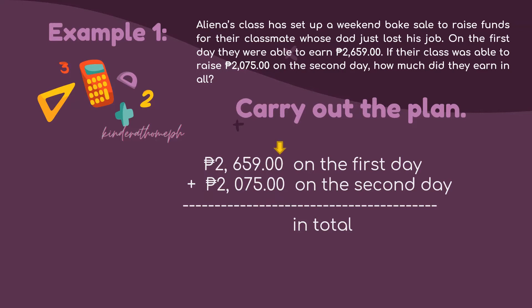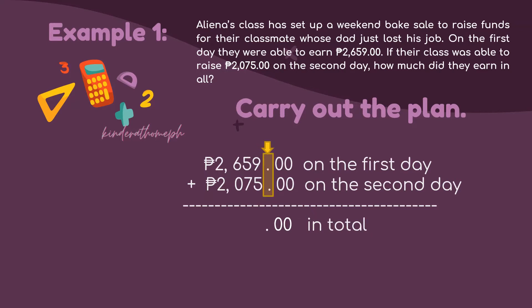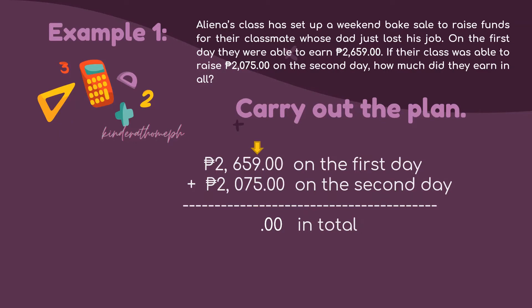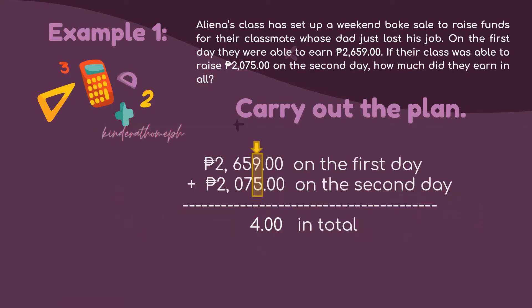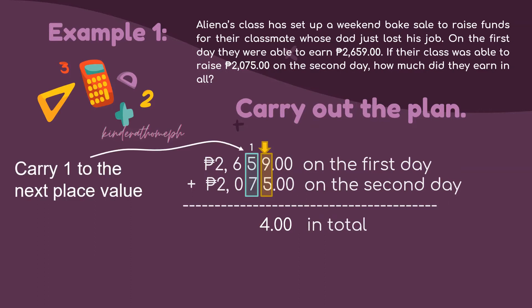We add 2,659 pesos and 2,075 pesos step by step. Starting with the cents columns: 0 plus 0 equals 0, and again 0 plus 0 equals 0. We copy the decimal point. Moving to the ones column, we have digits 9 and 5. Nine plus 5 equals 14, so we put 4 down in the sum and carry 1 to the next place value.